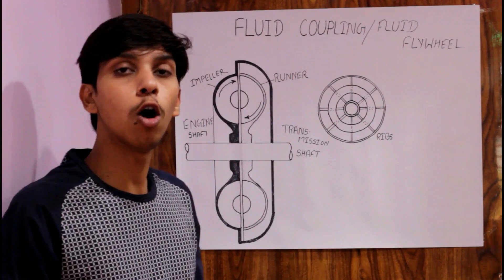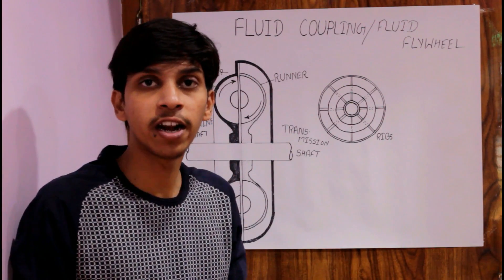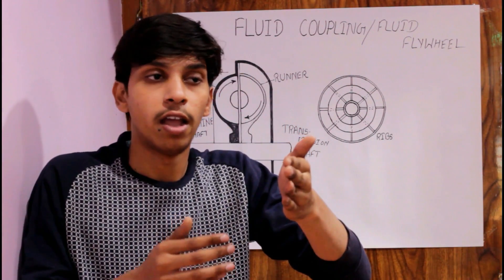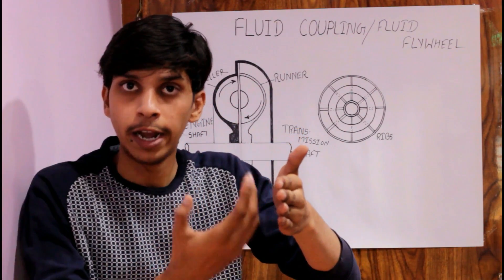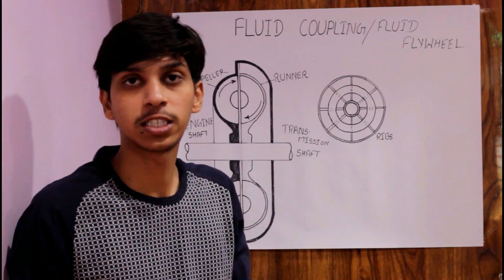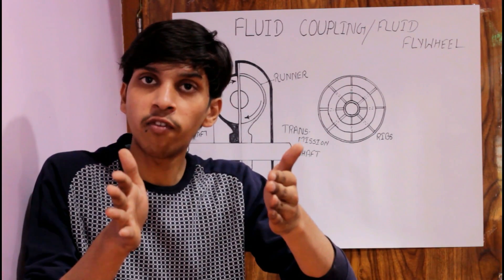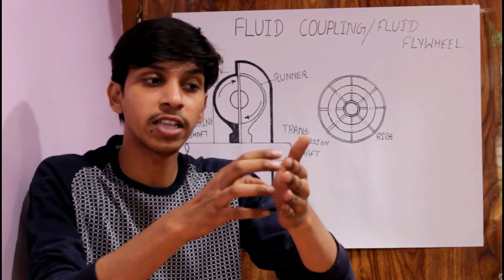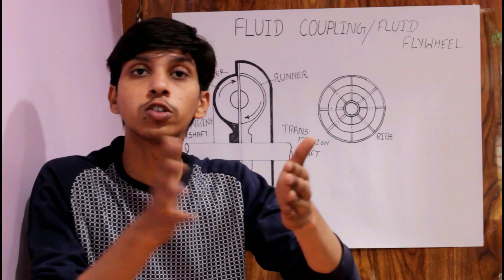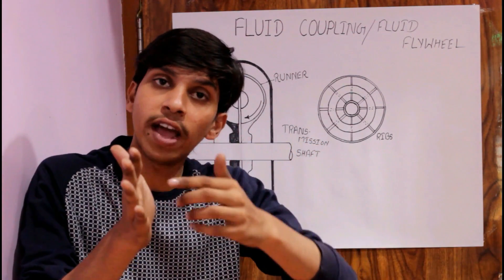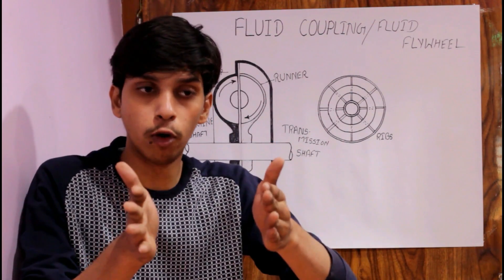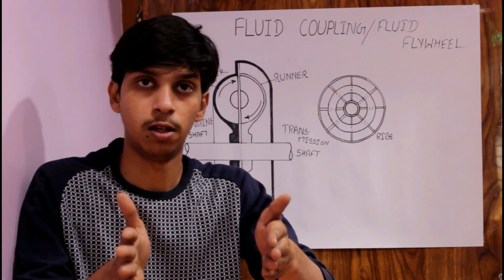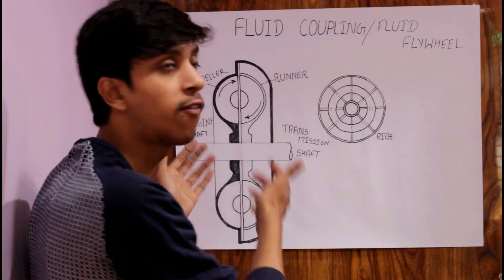If you take an example — you all know about the table fan. A table fan draws air from the back and throws the air to the front. When the table fan starts spinning, it throws the air forward. Now if you put another fan in front, the air goes forward and strikes this second fan, and because of the force of the air, this second fan also starts spinning. This is the coupling — but this is air coupling. In our fluid flywheel, we use fluid coupling instead of air.